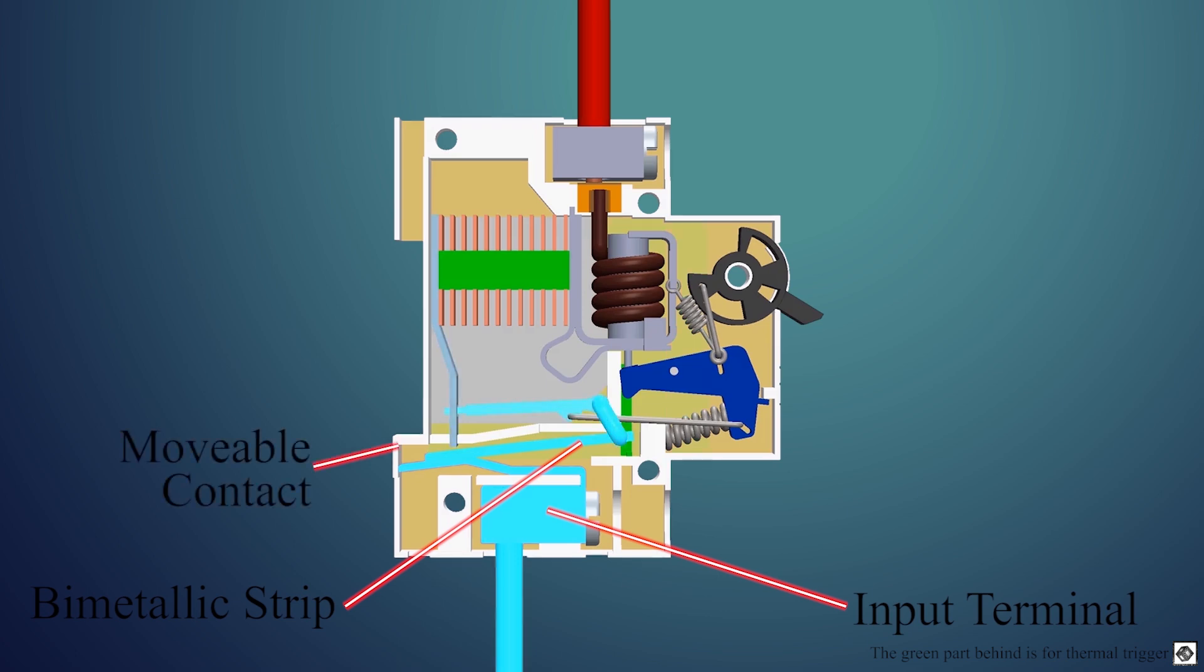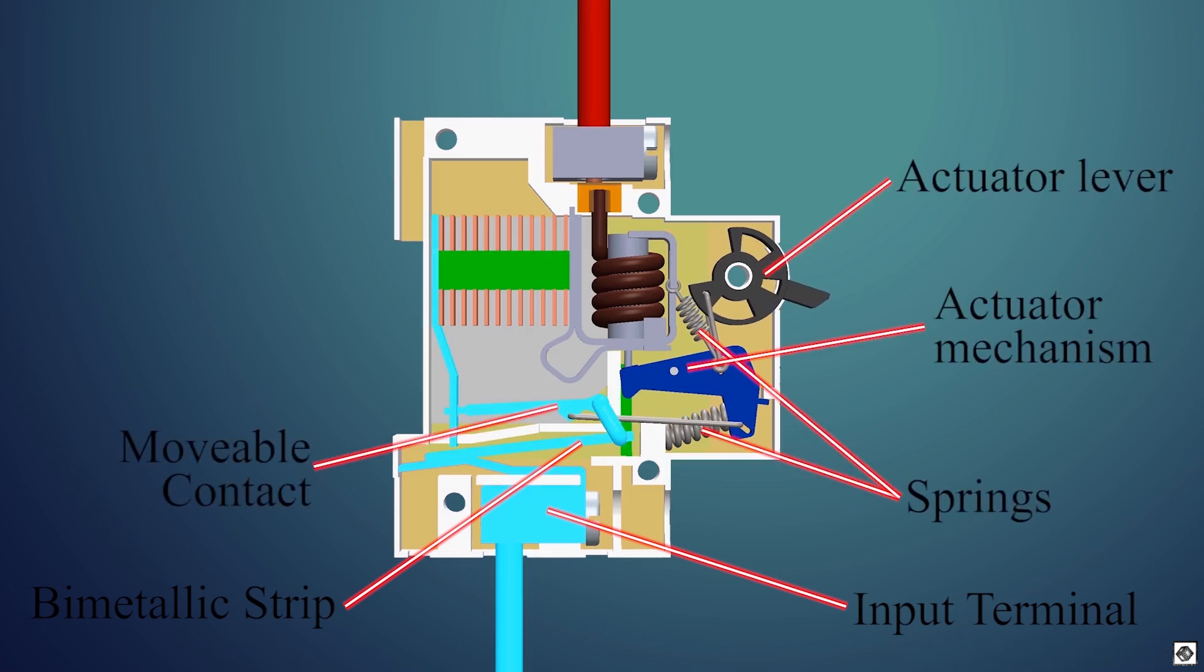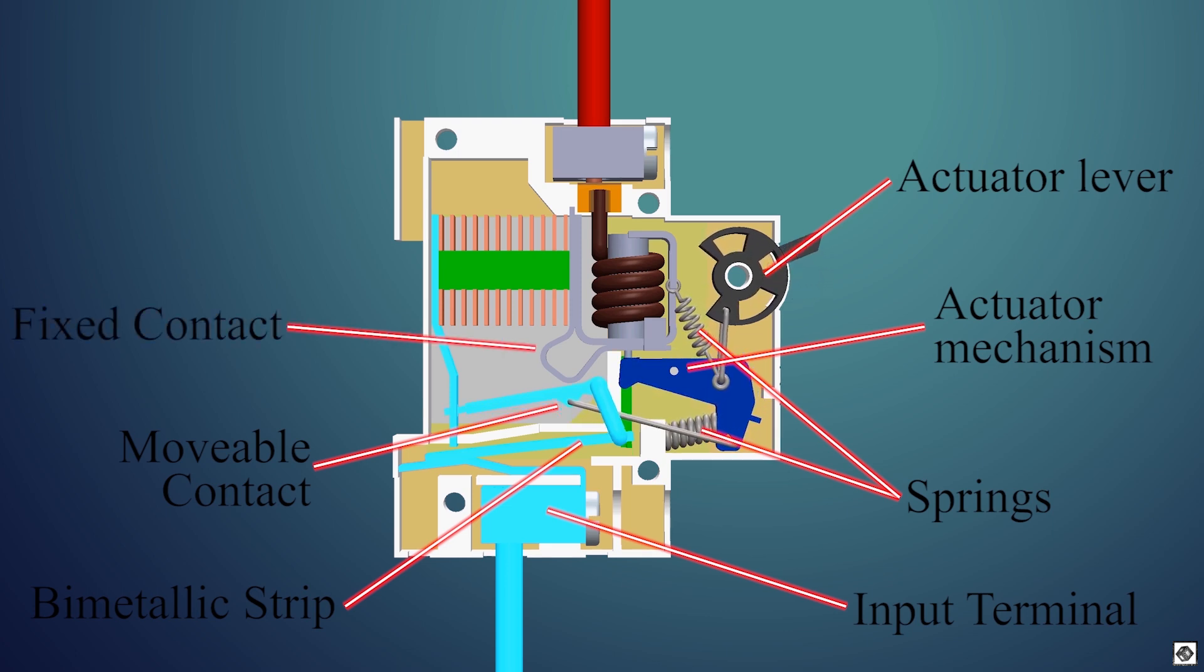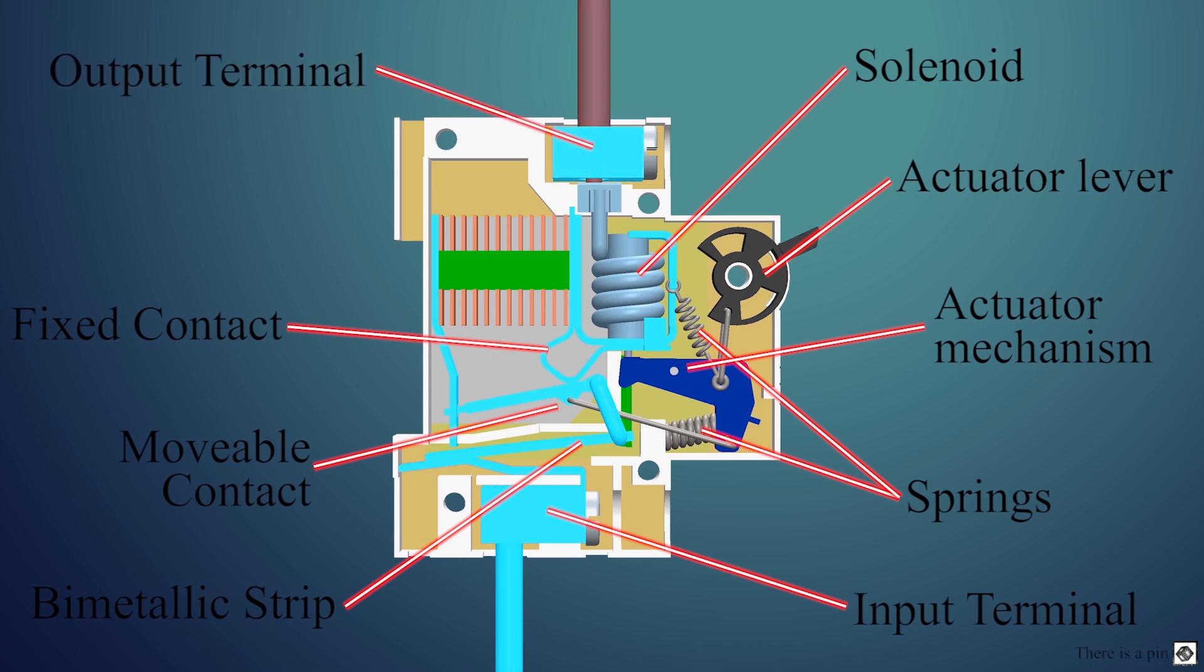Then we have the movable contact. It is moved by the mechanism to turn the MCB on or off. The other part of the contact is fixed. Now from the fixed contact, the current flows into the solenoid coil. This solenoid coil is used to create a magnetic field that will push a plunger with a pin as required. Then we have the output, which goes out to the appliances.